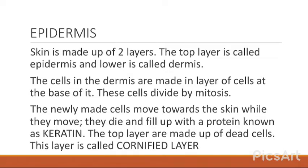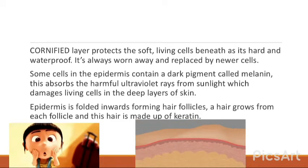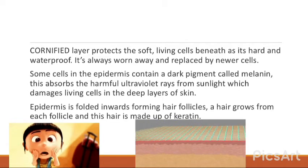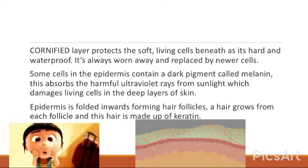The skin is made up of two layers: the top layer is called the epidermis and the lower is called the dermis. Cells in the dermis are made in the layer of cells at the base of the epidermis; these divide by mitosis. The newly made cells move towards the skin surface, die, and fill up with a protein known as keratin. The top layer of dead cells is called the cornified layer, which is hard and waterproof.